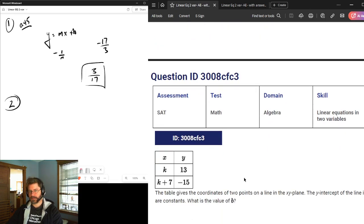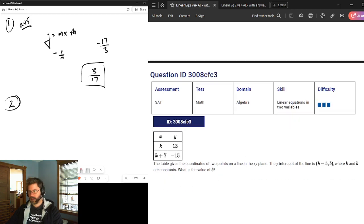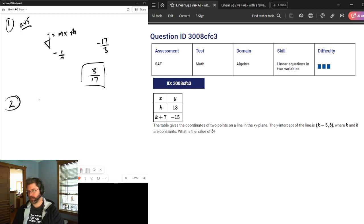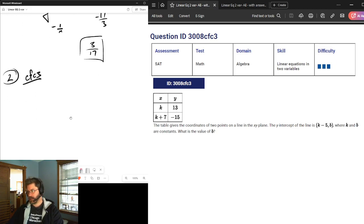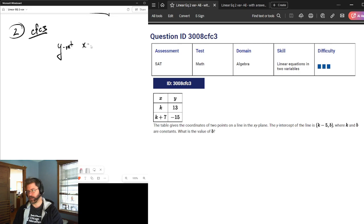Question 2. We've got a table. Code ending CF C3. Coordinates two points lie in the plane. They give us the y-intercept. Remember at the y-intercept, x equals what? By definition, at a y-intercept, x equals 0. So if k minus 5 is the x-intercept of our y-intercept, well, that means k minus 5 equals what? 0, of course. So k is 5.